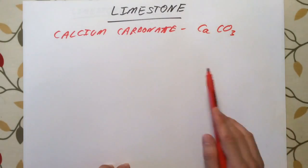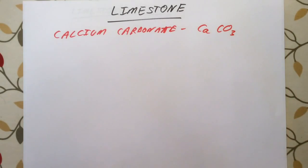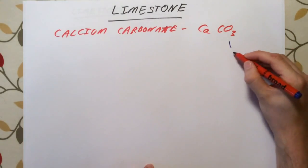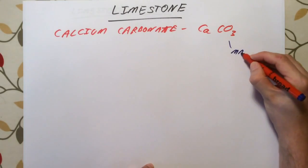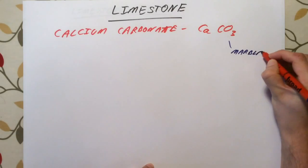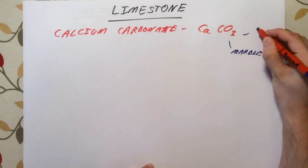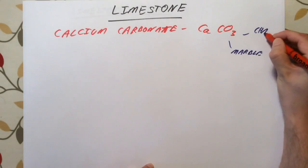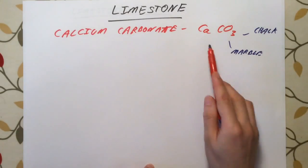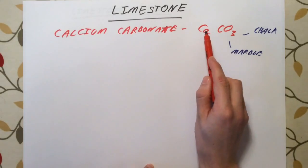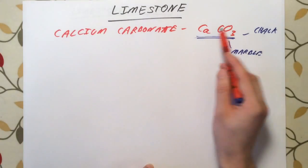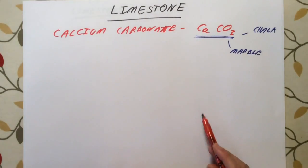It's not just limestone this makes up — it also is the main part of marble and chalk. To be quite clear, CaCO3 isn't in itself limestone; it's just a mineral that makes it up.